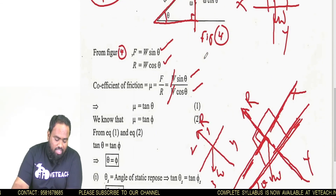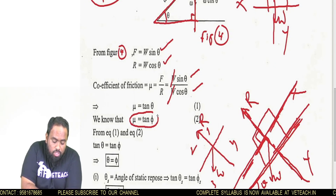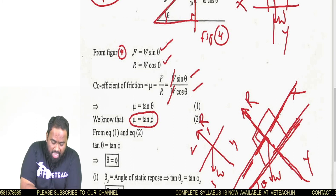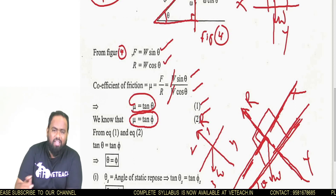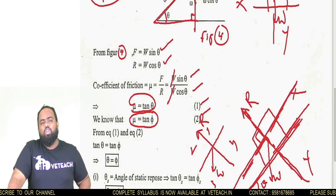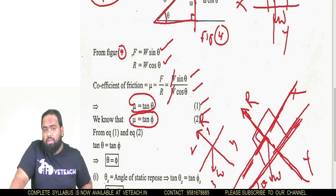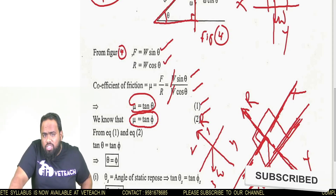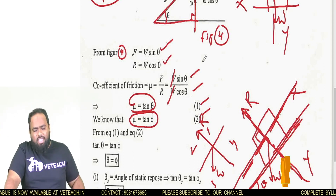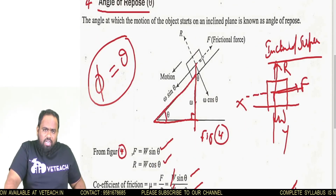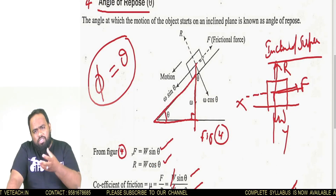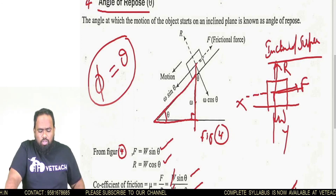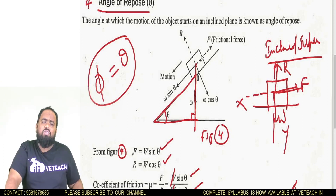We know that mu equals f divided by r. Substituting: mu equals W sin theta divided by W cos theta. The W cancels, giving mu equals tan theta. We previously solved that mu equals tan psi. If mu equals tan psi and mu equals tan theta, then tan theta equals tan psi, so theta equals psi. That is the logic. Whenever this question is asked for 7 marks — prove that angle of repose equals angle of friction — use this equation. If you have any doubts, please contact us; we are always here to help you.